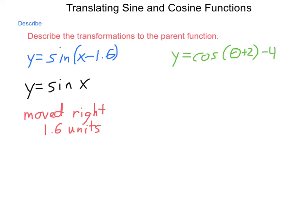Next, what if we have y equals cosine of theta plus 2 minus 4? First, again, we need to find what is our parent function. Our parent function is y equals the cosine of theta. And what's happened to theta? Well, two things.